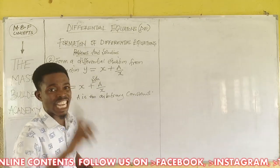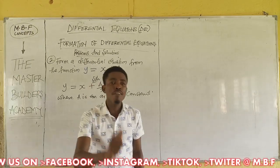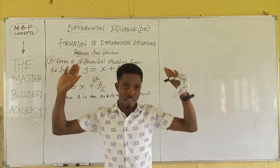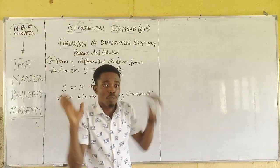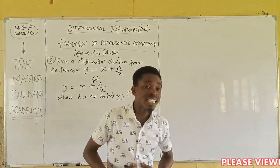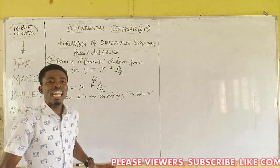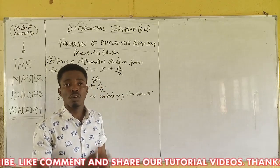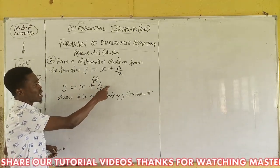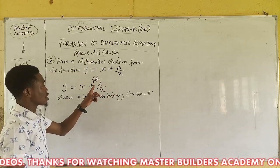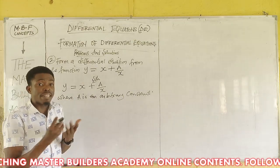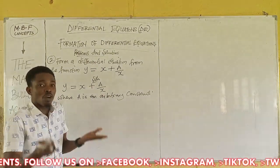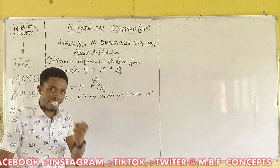When you have one arbitrary constant, you differentiate once, make the arbitrary constant the subject, substitute, simplify, and you are done. This function will land us in a first order differential equation because we have one arbitrary constant, which means we differentiate only once. Before differentiating, we need to make this a linear function because this part is a fraction and we do not want it in fractional form.